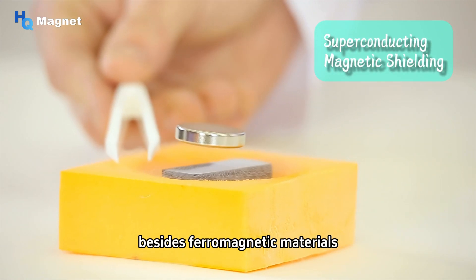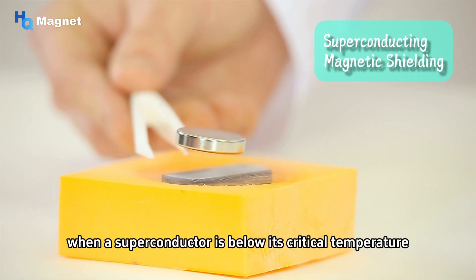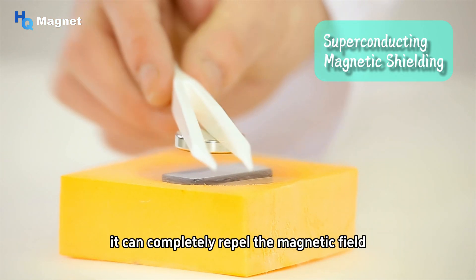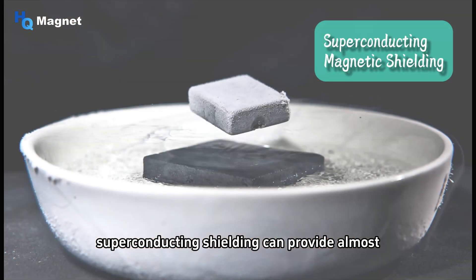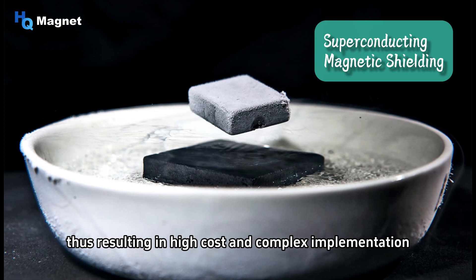Besides ferromagnetic materials, you can also use superconductors for static magnetic shielding. When a superconductor is below its critical temperature, it can completely repel the magnetic field, which is known as the Meissner effect. Superconducting shielding can provide almost perfect magnetic field isolation, but it requires a low temperature environment to maintain the superconducting state, thus resulting in high cost and complex implementation.